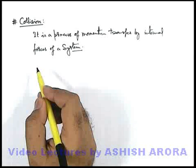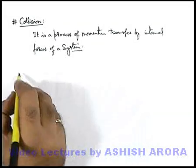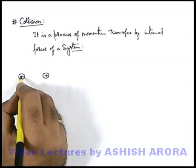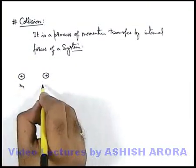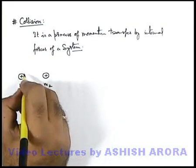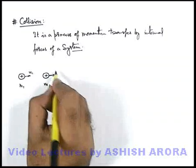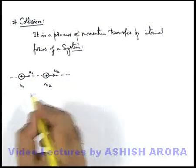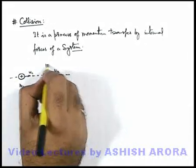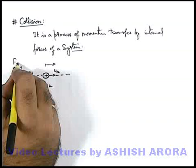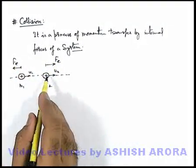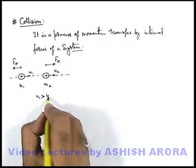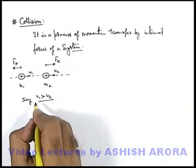To analyze the phenomena of collision, we'll take up an example. Let us consider we are having two balls, and say both are positively charged. These are having masses m1 and m2. Say the balls are moving with speeds u1 and u2 along the same line of motion. We know well that like charges repel each other, so the two balls will experience an electric force we can term as Fe, acting on the two balls in opposite directions. Here, if we consider u1 is more than u2.